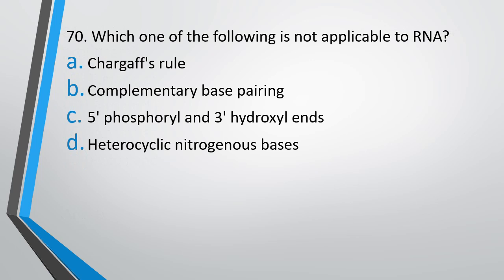Question No. 70. Which one of the following is not applicable to RNA? Option A: Chargaff's rule. Option B: Complementary base pairing. Option C: 5' Phosphoryl and 3' Hydroxyl. Option D: Heterocyclic nitrogenous bases. The correct answer is Option A: Chargaff's rule, which is not applicable to RNA.